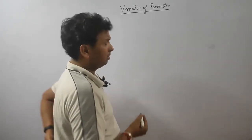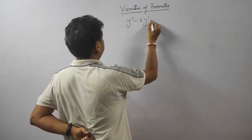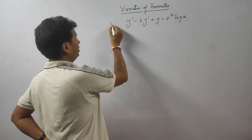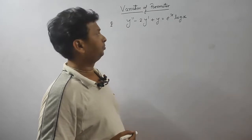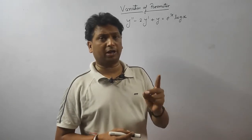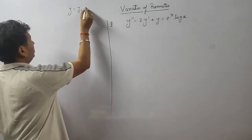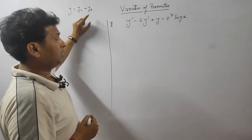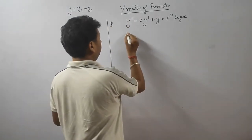I will explain with one example. Suppose we have taken the equation: y double dash minus 2y dash plus y equals e to the power x log x. This question is non-homogeneous — correct — because the right-hand side value is non-zero. When an equation is non-homogeneous, the solution contains two parts.